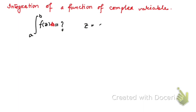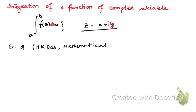Here z is a complex number, so z = x + iy. Let me take a question from the mathematical physics book by A.K. Das, which is a very popular book. I'll explain with the help of an example from that book, which will make it easier to understand.